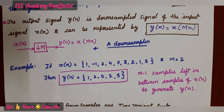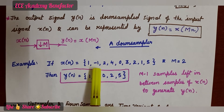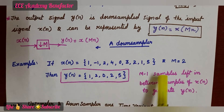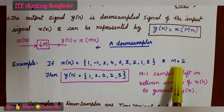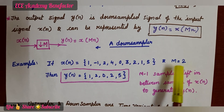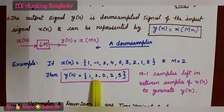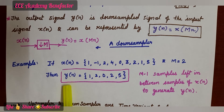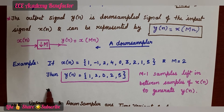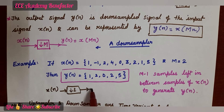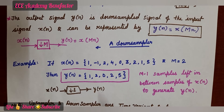Downsampling is a process where you are reducing the sampling rate of a discrete time signal x of n, and it is mathematically represented by y of n equals x of capital M dot n. Let us take one example. If x of n equals 1, minus 1, 2, 4, 0, 3, 2, 1, 5 — this is the given input signal and it is downsampled by a factor of 2. What will be the output signal y of n?